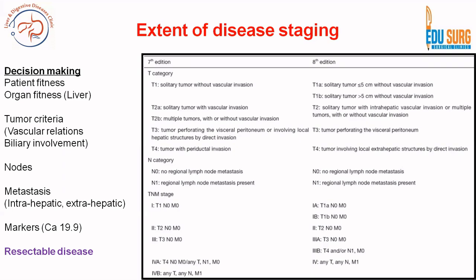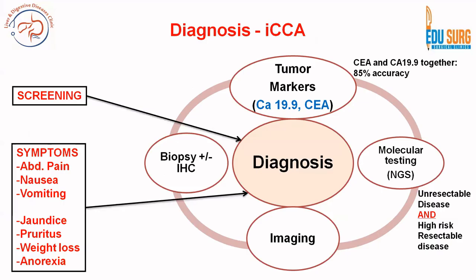If you remember these six points — TNM with patient fitness, organ fitness, and markers — you can make decisions very easily in cases of intrahepatic cholangiocarcinoma. For all other patients where any of these points are not met, the patient has an unresectable or metastatic disease. That is how imaging-based diagnosis and resectability determination can be made.